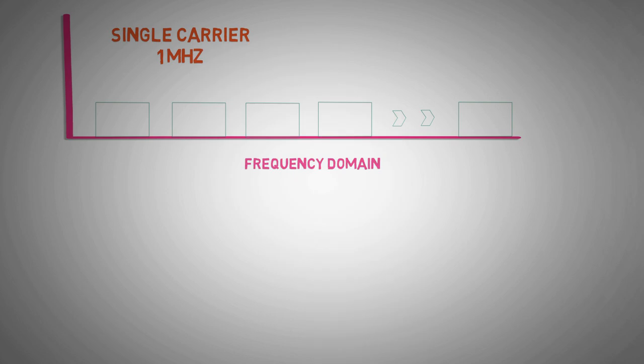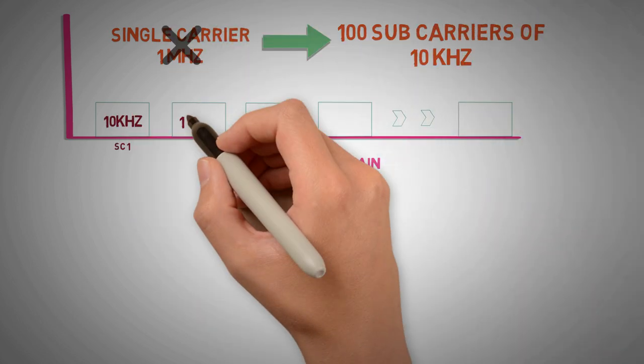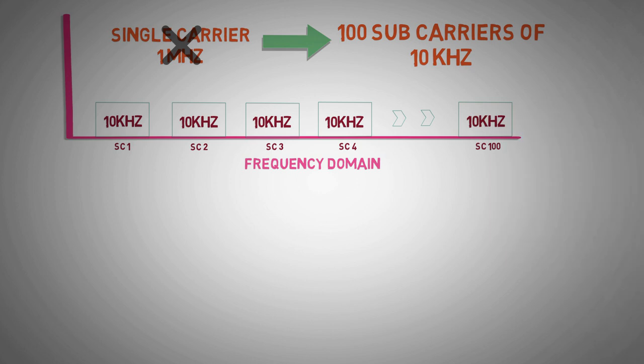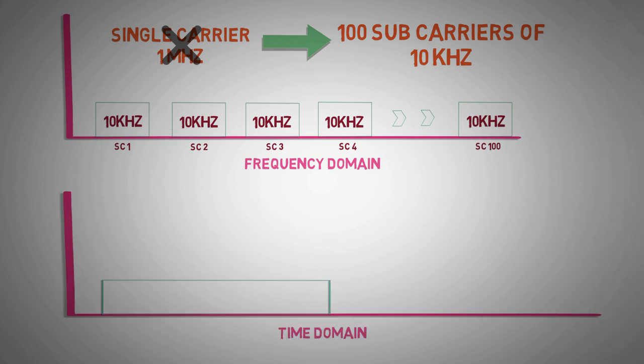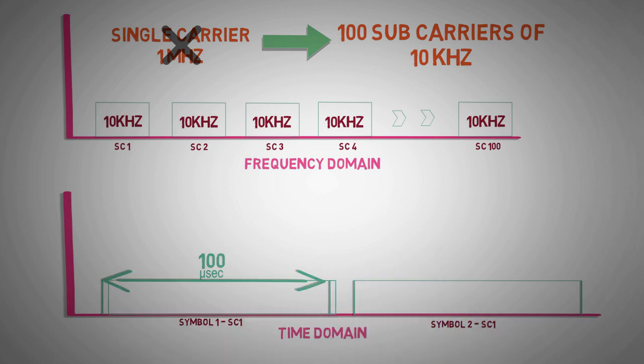So instead of having a single carrier of 1 MHz, we divide it into 100 sub-carriers of 10 kHz, each having a symbol duration of 100 microseconds. So a delay spread of 2 microseconds will have a negligible effect over the channel efficiency.